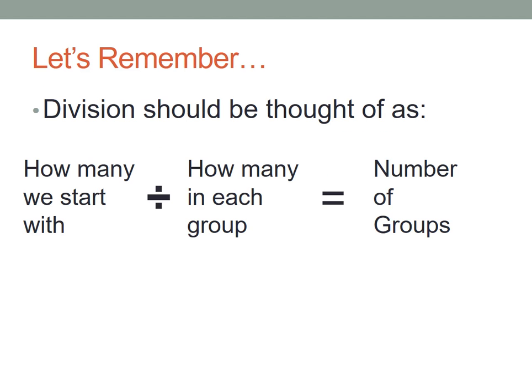So let's remember what division should be thought of as. Really what division is is how many we start with, we divide it by how many is going to be in each group, and the answer is the number of groups.